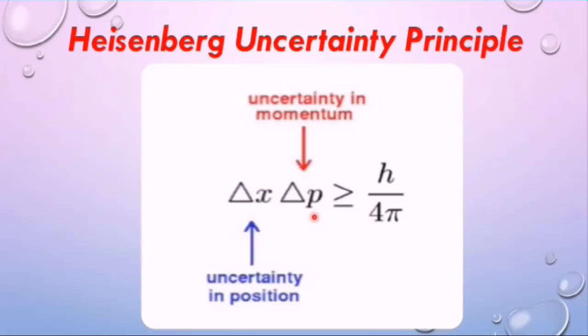There is uncertainty in momentum if position is known accurately and there will be uncertainty in position if the momentum of a particle is known accurately. Therefore, product of uncertainties in the position and momentum of a particle is greater or equal to h over 4 pi where h is Planck's constant.